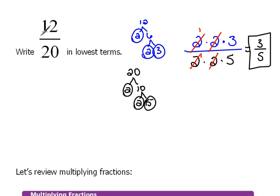I mean, we could say 2 goes into 12 six times, and 2 goes into 20 ten times. And then we could say, oh, 6 and 10, those things have something in common. 2 goes into 6 three times, and 2 goes into 10 five times. So we're left with 3 fifths.